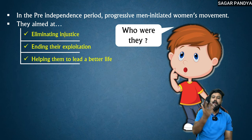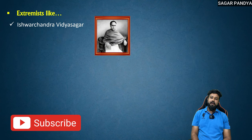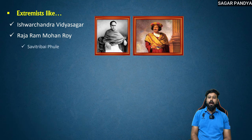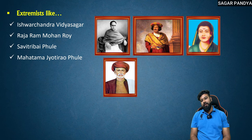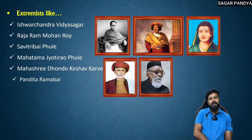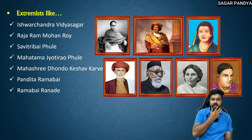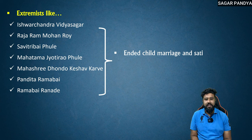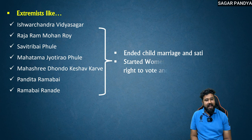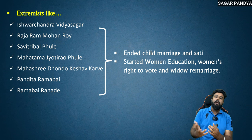Now who were they? There were certain reformers like Ishwar Chandra Vidyasagar, Raja Ram Mohan Roy, along with Savitribai Phule and Mahatma Jyotirao Phule, Maharshi Dhundo Keshav Karve, Pandita Ramabai, Ramabai Ranade. All of these together got social evils like child marriage and sati banned, and they started women's education. They fought for women's right to vote and widow remarriage.